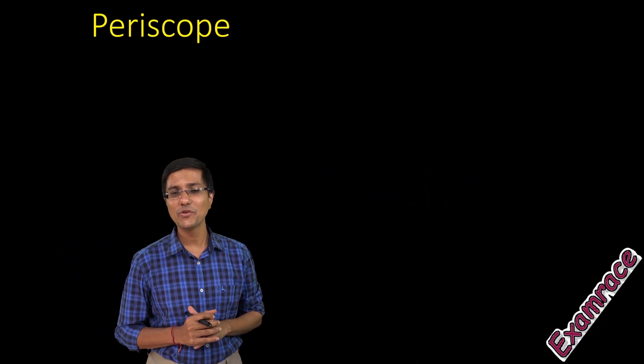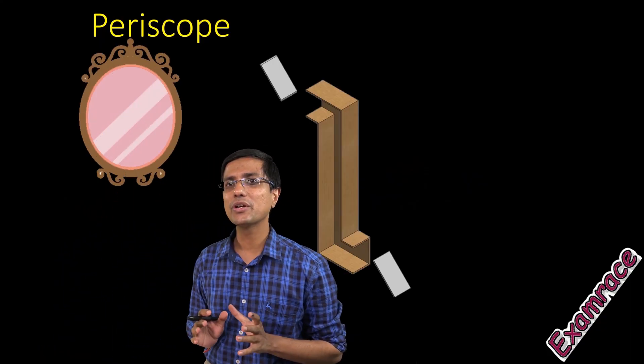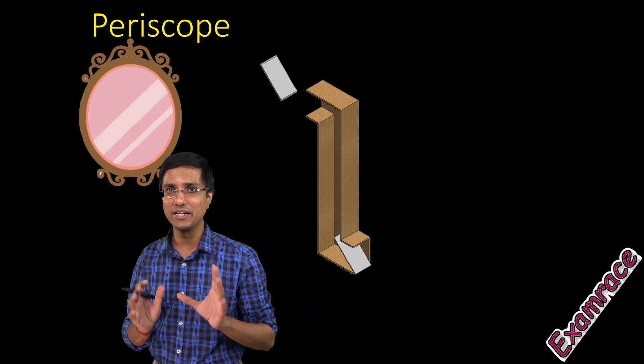Now let's look at a very simple device known as a periscope, which is made by using two mirrors.